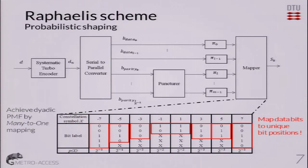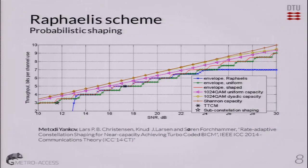Our colleague in the coding group, Metody Plamenov-Yankov, has given us these already-published results, in which we effectively showed that in the case of a 1024-QAM dyadic shaped constellation, we are essentially above the Shannon limit compared to the uniform capacity curve in pink. This is for the linear region.